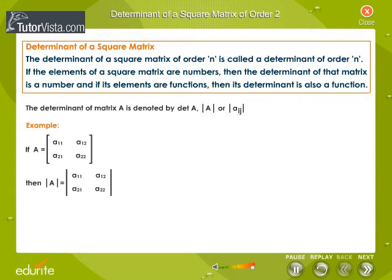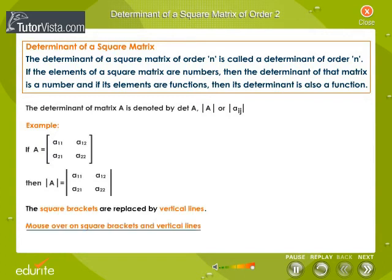An example is shown. Mouse over on the words square brackets and vertical lines. The square brackets denote the matrix and the vertical lines denote the determinant of the matrix.